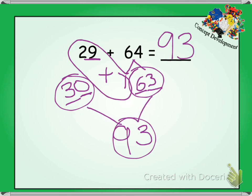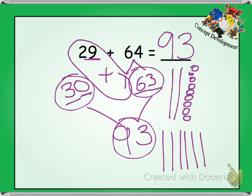I can also check with a picture. I'm going to draw my quick tens and ones. 10, 20, 21, 22, 23, 24, 25, 26, 27, 28, 29. And then 60, 50, 64.